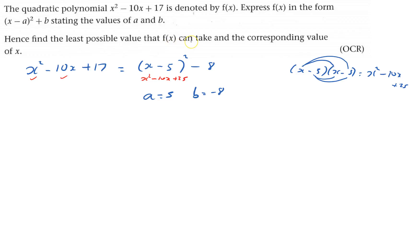Hence, find the least possible value it can take. Okay, the x minus 5 all squared, the lowest that can possibly be is 0. So the least value is minus 8.